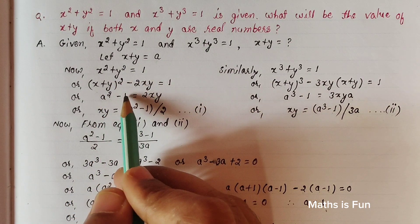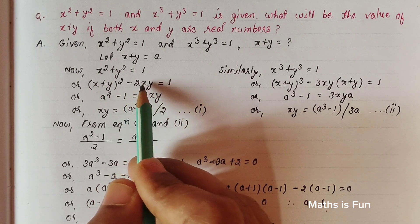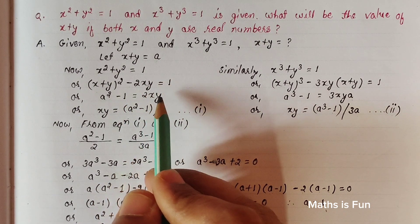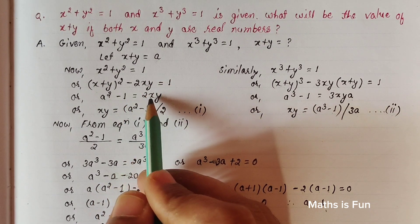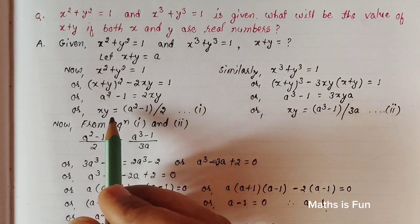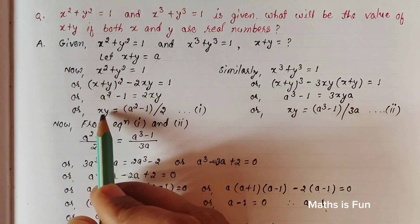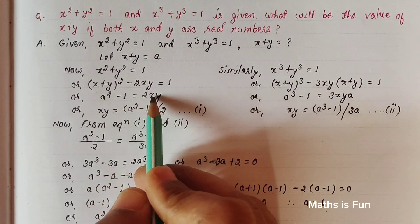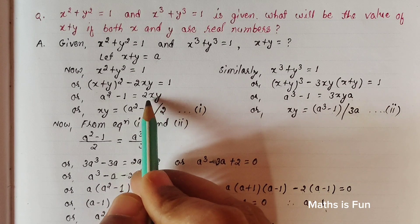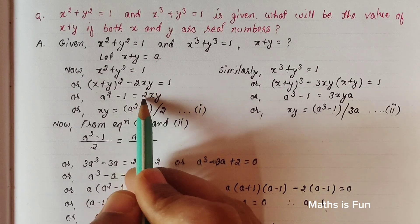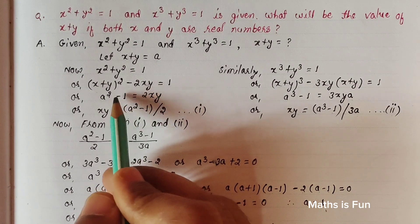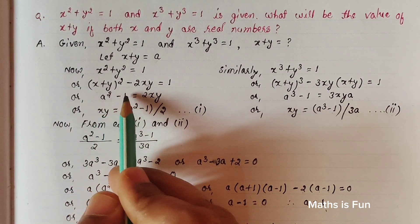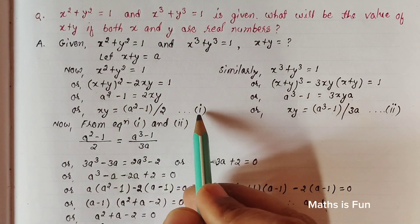We substitute a for x + y, move the -1 to the right-hand side, and move -2xy to the right-hand side as +2xy. We want the value of xy, so dividing both sides by 2 gives us xy = (a² - 1) / 2. This is our first equation.